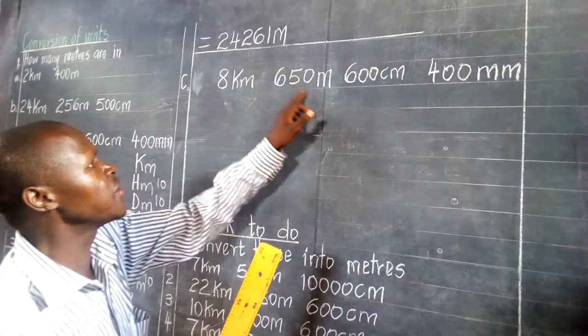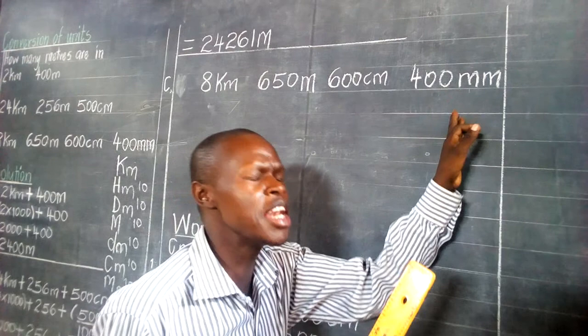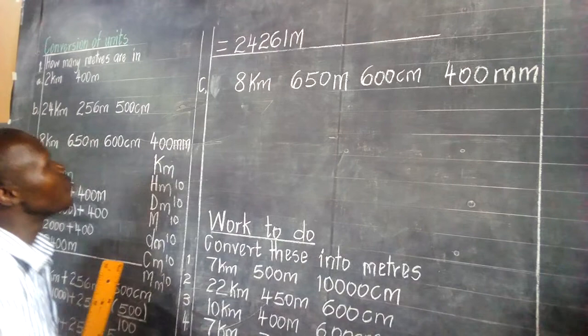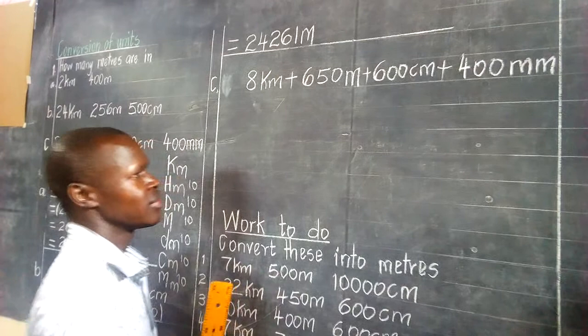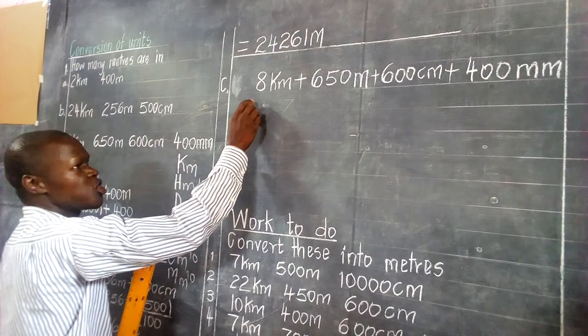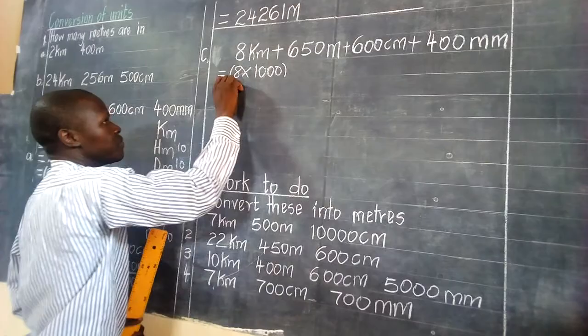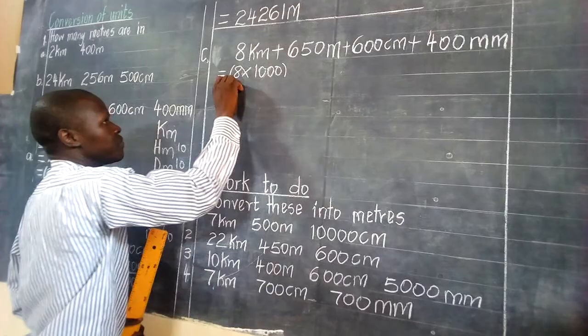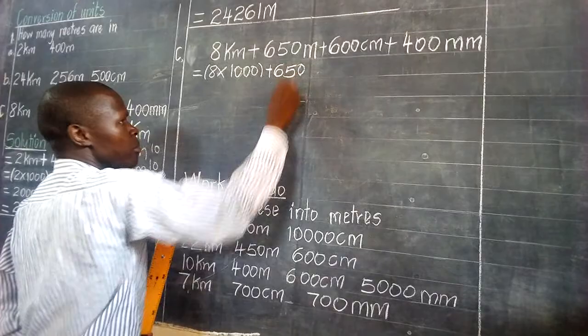Let's go to problem C. We have 8 kilometres, 650 metres, 600 centimetres, and 400 millimetres. We are supposed to change everything to metres. We take 8 times one thousand — from our formula, from kilometres to metres we count one, two, three — that is one thousand. So 8 times 1,000, plus 650 metres, because it is already in metres.